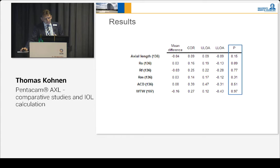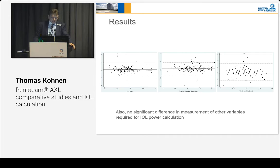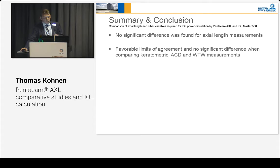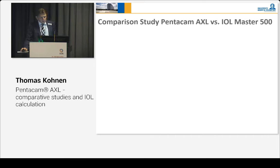Looking at the other variables, the results show a very good correlation in terms of the steep and flat meridians. The ACD anterior chamber depth was slightly different, as was the white-to-white measurement. Statistically, the limits of agreement are excellent, and no significant difference in measurement of other variables required for IOL power calculation was found. In summary, no significant difference was found for axial length measurement. Favorable limits of agreement and no significant difference were found when comparing keratometry, ACD, and white-to-white measurements. Lens calculation could probably be made with this device in the near future, with further research.